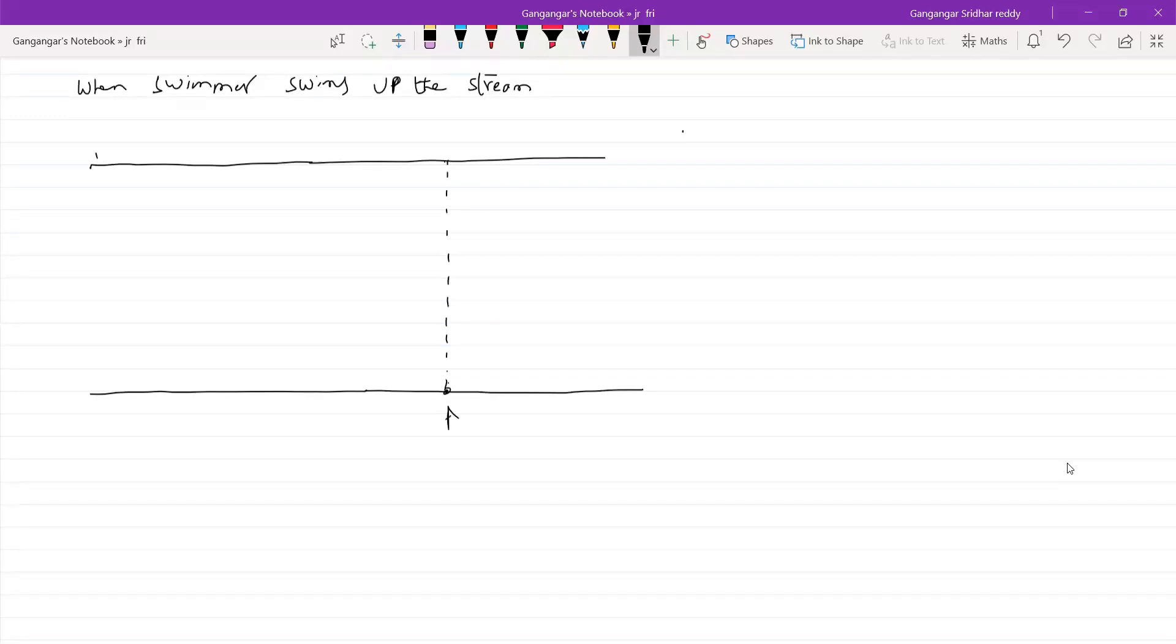Sir, when we say downstream, we meant that velocity of river and velocity of swimmer with respect to ground in x direction are the same direction. Yeah, better to say that component of VSR will be along VR, that's called downstream. Component of VSR will be along VR, then it's called downstream, and I'll show that comparison now.